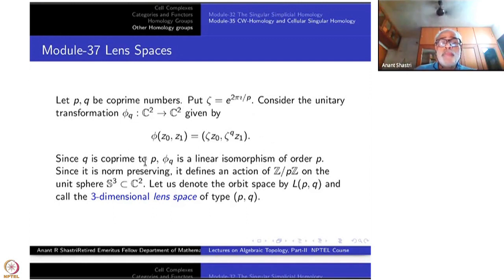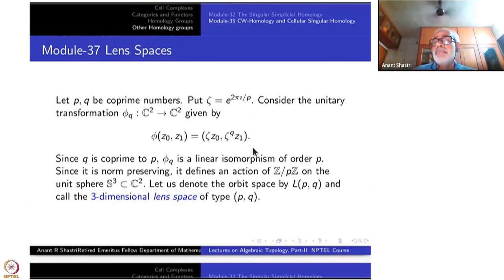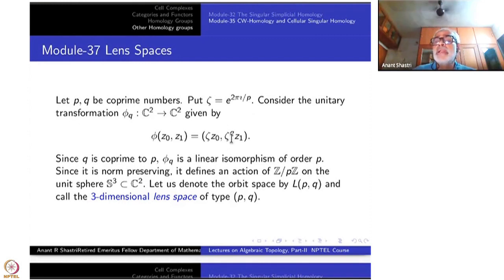Since Q is co-prime to P, you can verify that this φ_Q is actually an isomorphism and its order is P. That means if you apply it P times — φ composed P times — you will get the identity map, because ζ^P and ζ^(PQ) both equal 1.